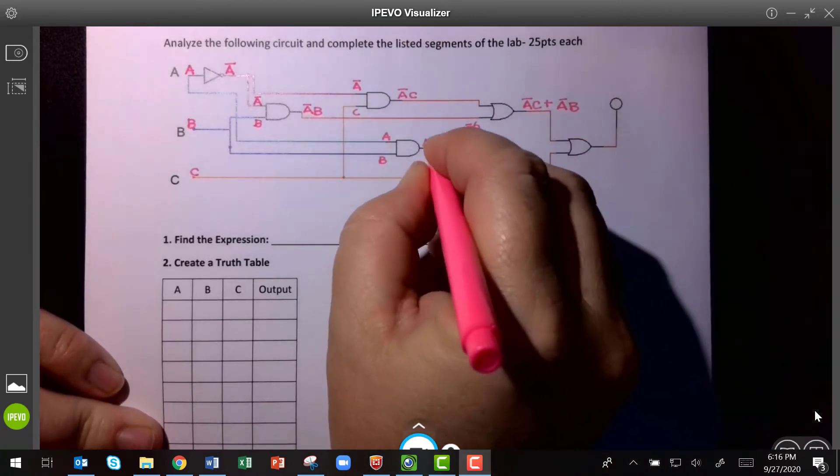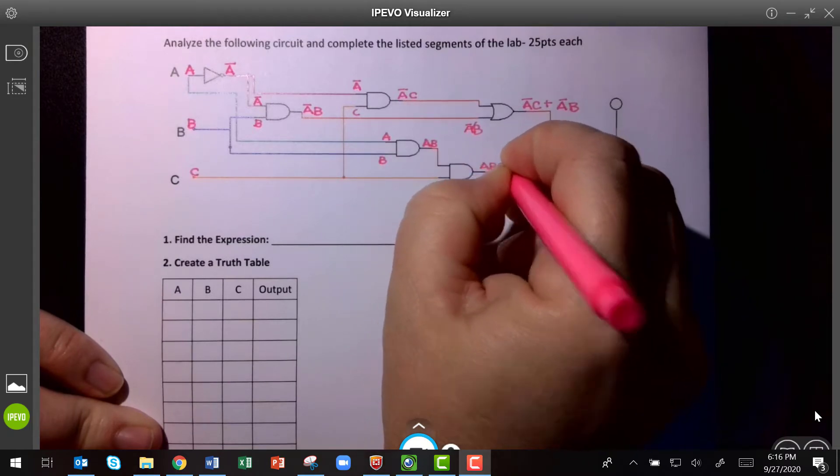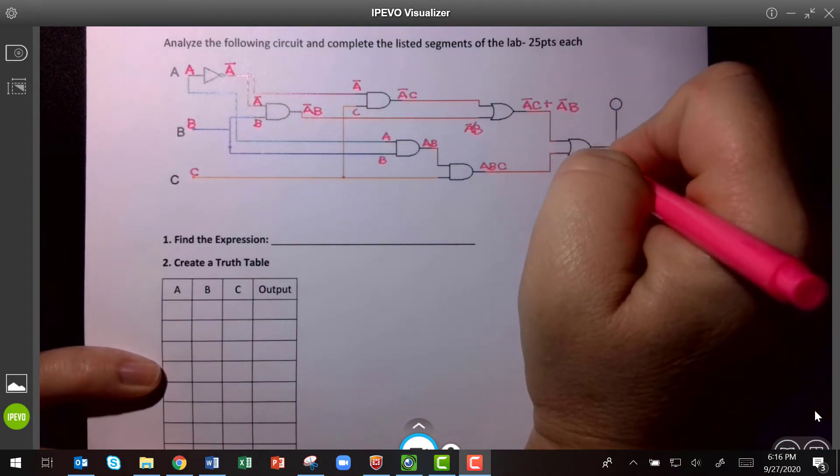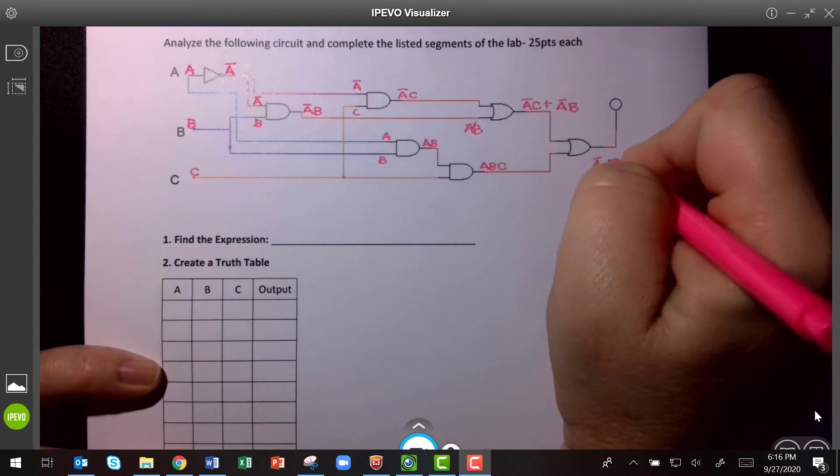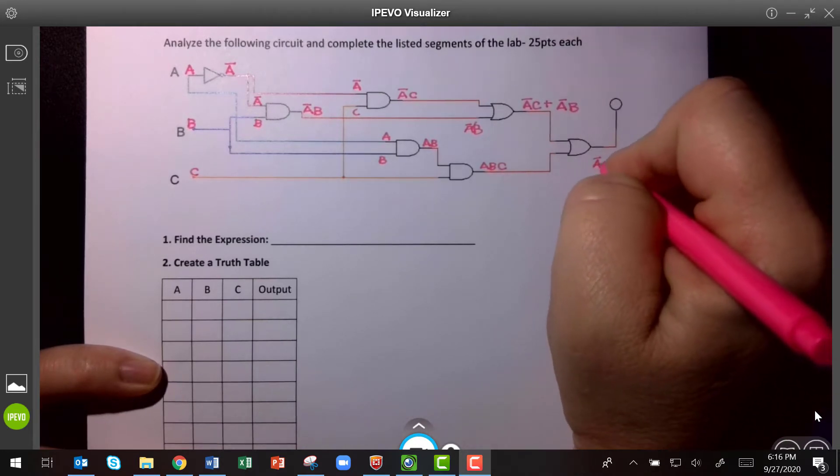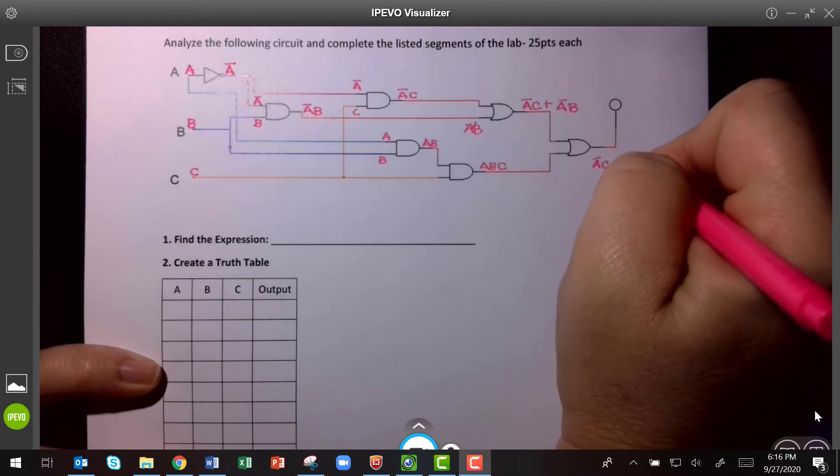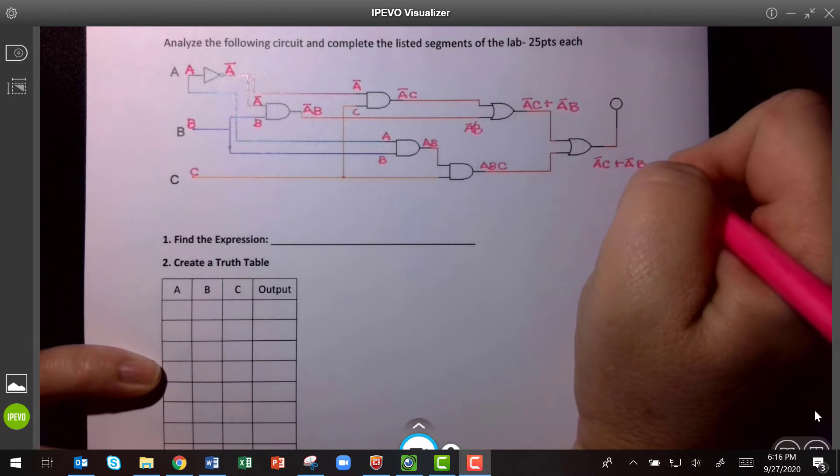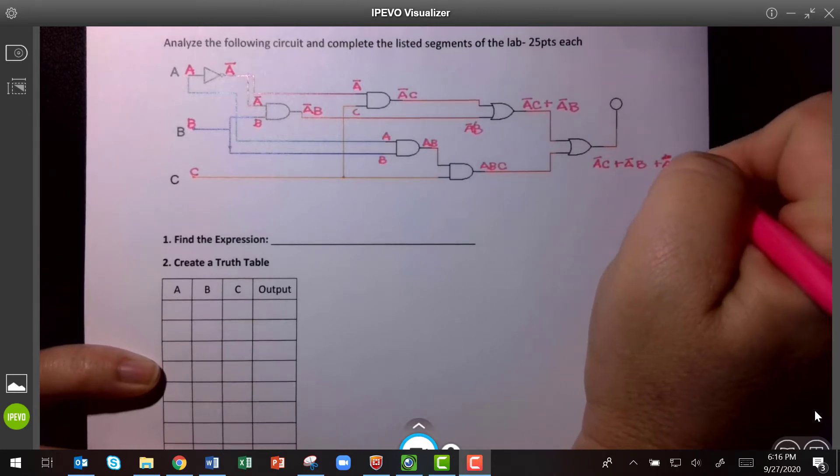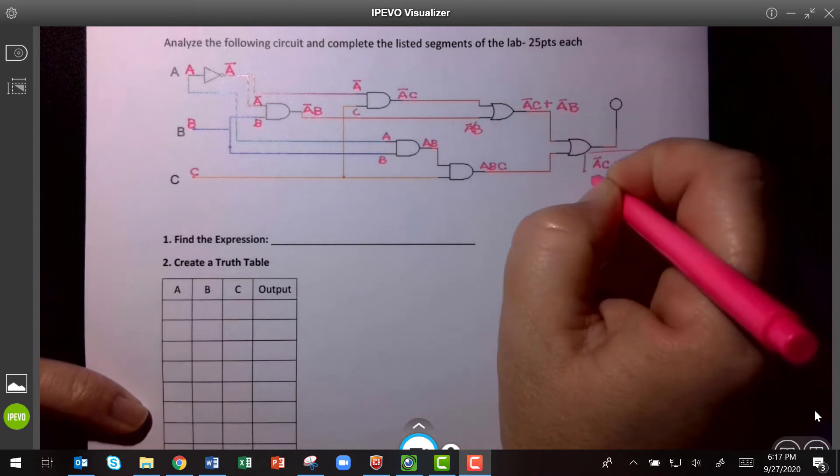And so this one had A, B coming in, and C, so it becomes A, B, C. A and B and C. And so that makes the overall output here be NOT A and C, or NOT A and B, OR A and B and C. So that would be our final expression.